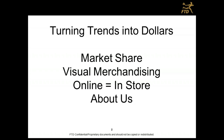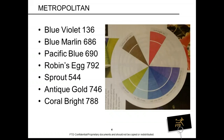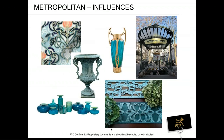Now, to introduce you to the four leading floral trends. Metropolitan — think of it as Nouveau thinking, a throwback to the time period from 1890 to 1910. History does repeat itself, and so do colors. There are seven colors per trend, and the seven colors chosen for Metropolitan contain four blues: blue violet, blue marlin, Pacific blue, and robin's egg blue; two accent colors, sprout and coral bright; along with one metallic tone of antique gold. All of the colors are based off Design Master color palettes.